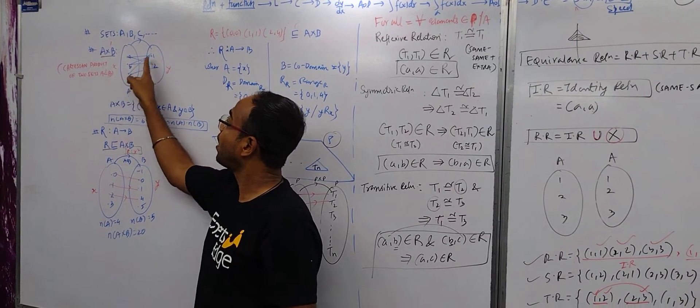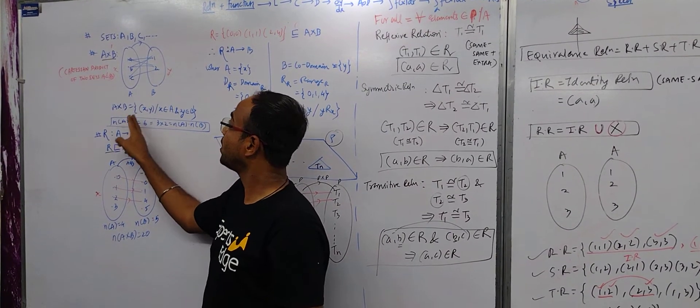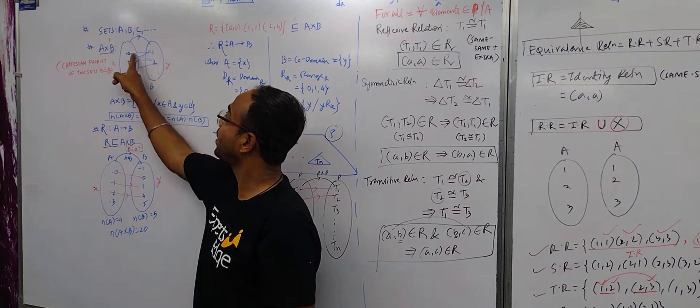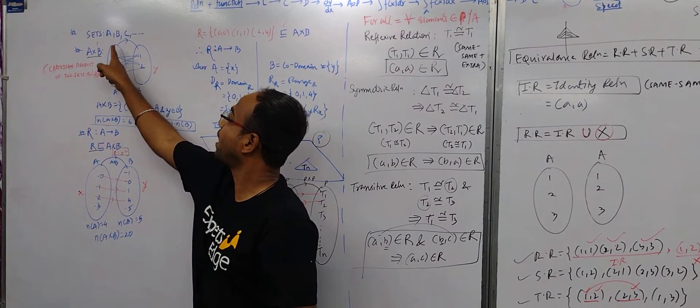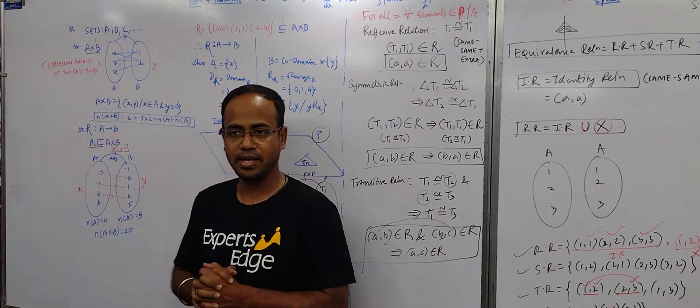How many elements here? Three. How many elements here? Two. So total number of elements here will be A1, A2, B1, B2, C1, C2. Six. This is 3 times 2. Therefore this is N of A into N of B. Agreed?